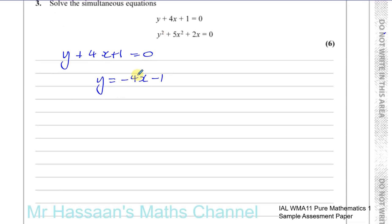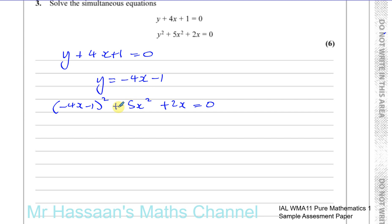Let me substitute this into the second equation. Instead of y, I put minus 4x minus 1, giving: minus 4x minus 1 squared plus 5x squared plus 2x equals 0. Now we have only x terms — no y terms — and we'll end up with a quadratic equation.